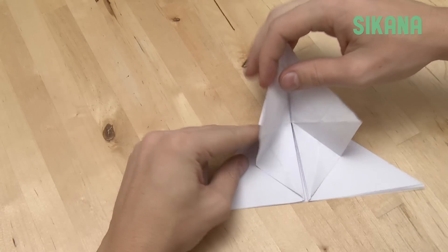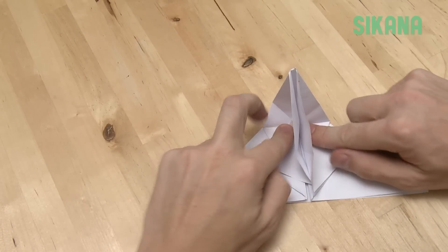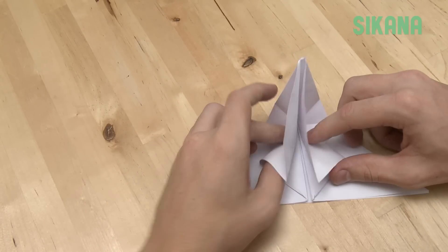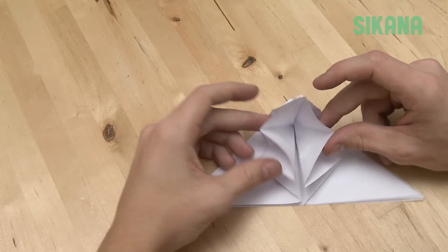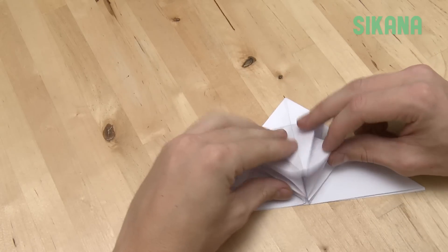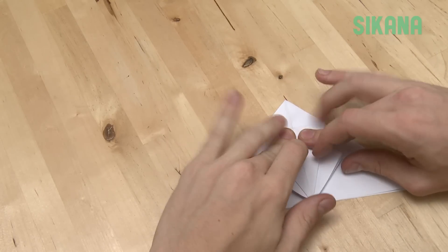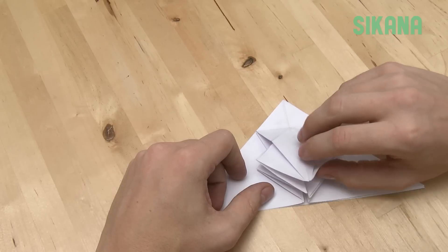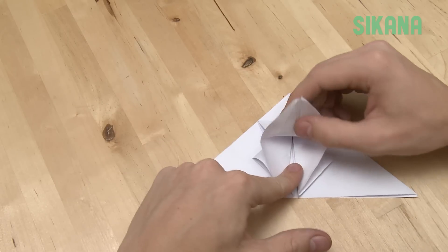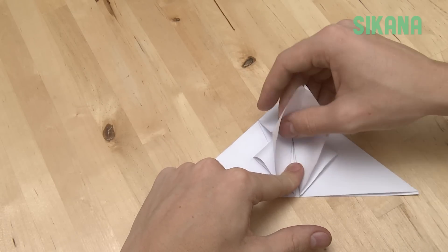Now we'll fold here, like this. Then open this part. You have two little pockets. Then close it. Now open the upper pocket. And using this very common fold, close it onto itself.